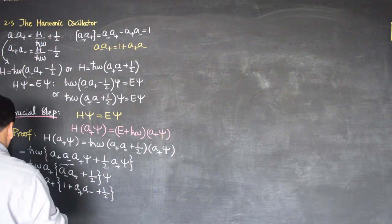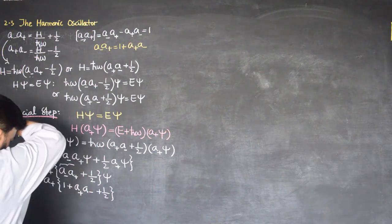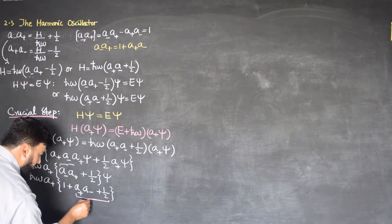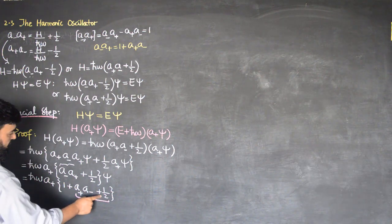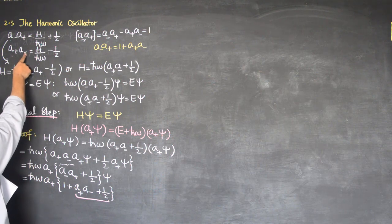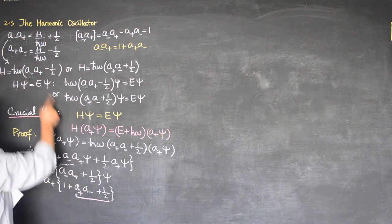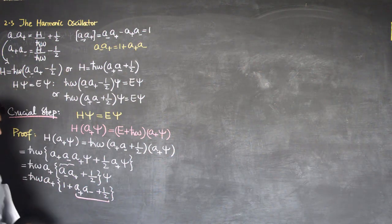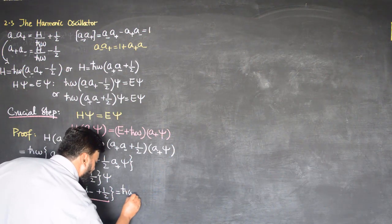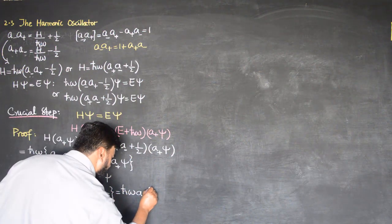When I write it like this, I can write using this relation: a+a- plus half, and a+a- — when this comes here it will become plus half. So a+a- plus half is equal to H over ħω. I can write that this thing is equal to ħω a+, then one plus...